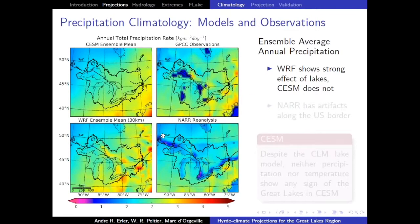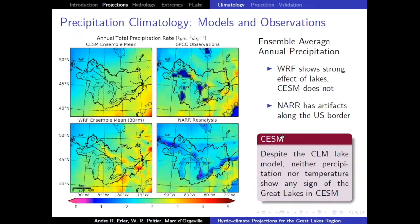Looking at how this is represented in models: in CESM there is essentially no trace of the lakes in the precipitation field, even though CESM actually does have a lake model — it doesn't seem to have much effect, probably because of the low resolution. Whereas in WRF, the rain belts in the lee of the lakes are very prominent — actually overestimated. NAR has strange artifacts along the border related to inconsistent data assimilation.